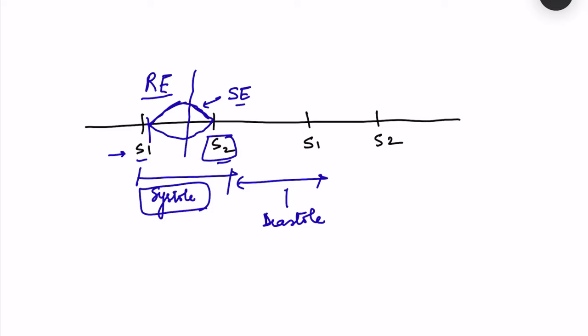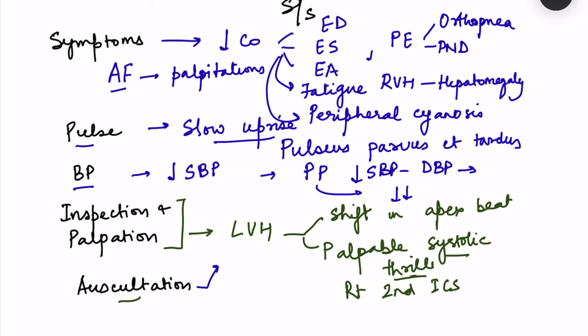S2 — the closure of the aortic valve — is soft in aortic stenosis. Both the murmur and the soft S2 are heard in the aortic area (second intercostal space, just right of the sternum), and the murmur radiates to the carotids. An audible S4 may also be heard, because the left atrium is contracting against the increased left ventricular end-diastolic pressure, making the normally inaudible S4 audible.